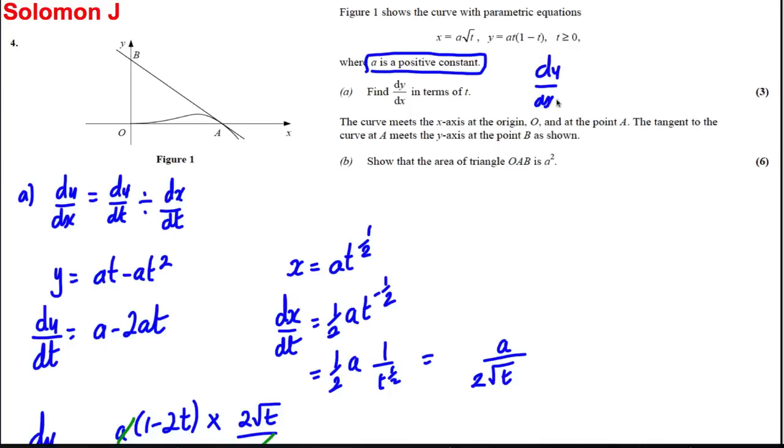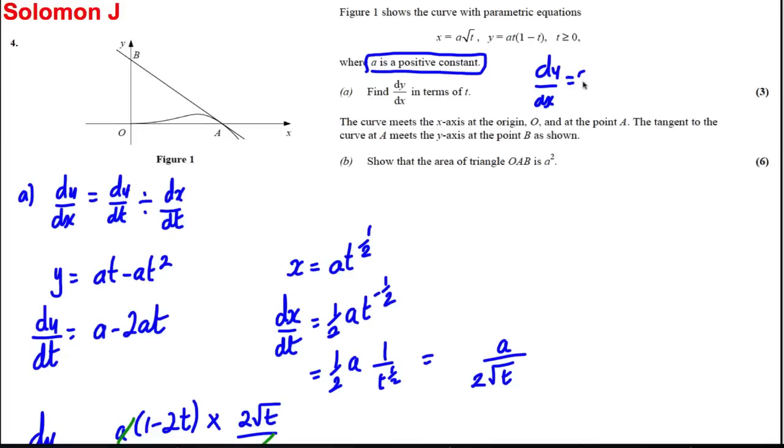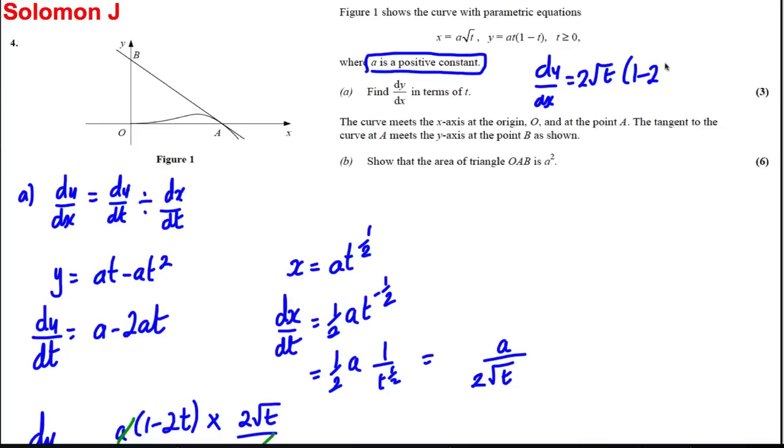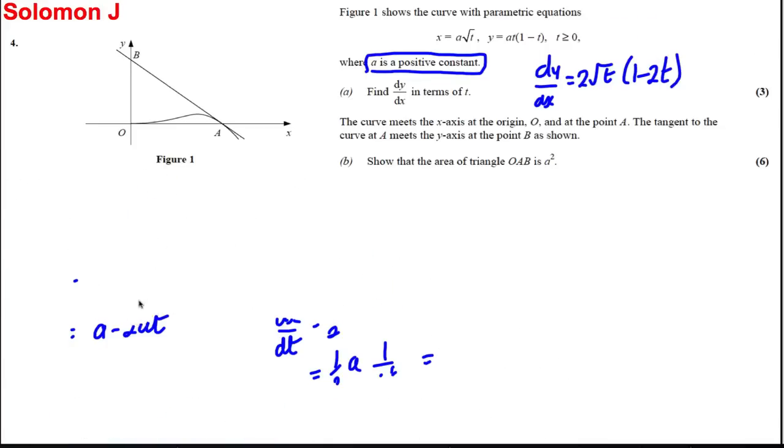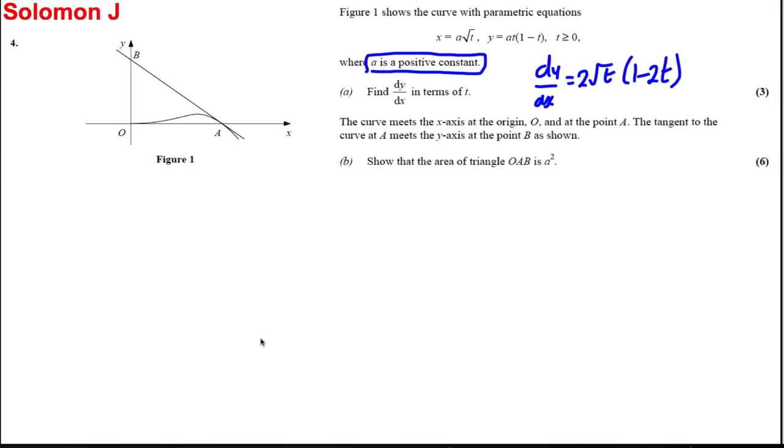So dy/dx equals 2√t(1 - 2t). I'm going to rub this stuff out now and let's try part (b). Now the curve meets the x-axis at the origin.